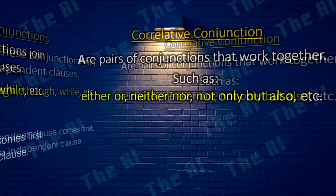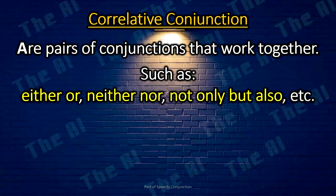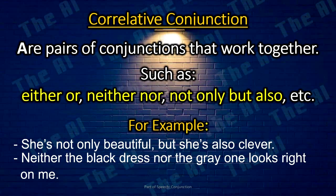Correlative conjunctions are pairs of conjunctions that work together, such as either/or, neither/nor, not only/but also, etc. For example: She's not only beautiful, but she's also clever. Neither the black dress nor the gray one looks right on me.